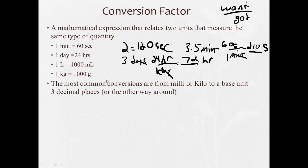Now, the ones we're mostly going to use, the most common conversions in chemistry are going to be from milli or kilo to a base unit. So, something like millimeters to meters or meters to kilometers, okay? Or kilometers to meters, et cetera. And each time we convert one of these, we're going to be moving the decimal three places.